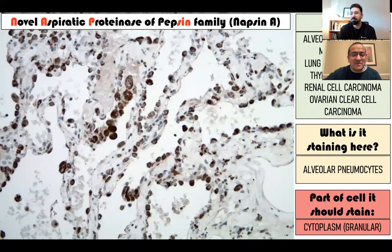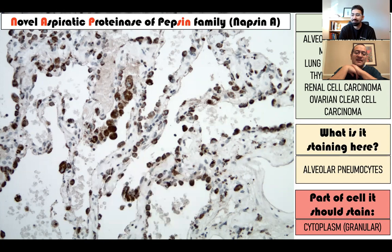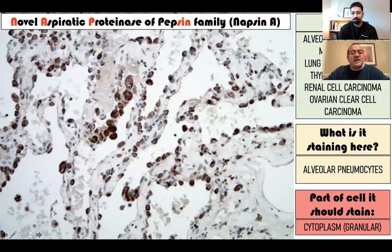Now we'll move to cytoplasmic markers. The first is Napsin A - novel aspartic proteinase of the pepsin family - a lung marker. First discovered by the Japanese scientific community, it became well known around 2010 as a marker of lung adenocarcinomas. It stains alveolar pneumocytes, lung adenocarcinomas, and also macrophages in the air spaces - so it's a little dirtier than TTF1. The difference between Napsin A and TTF1 is that Napsin A is a cytoplasmic marker. For cytoplasmic markers, the nucleus is left unstained - there's a little blue dot in the middle. Napsin A stains the cytoplasm in a granular fashion.